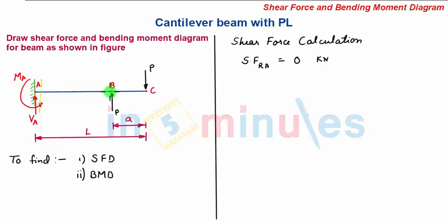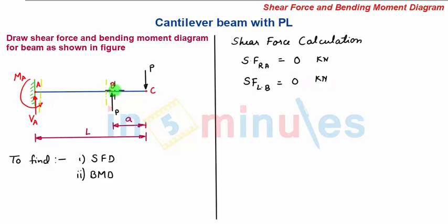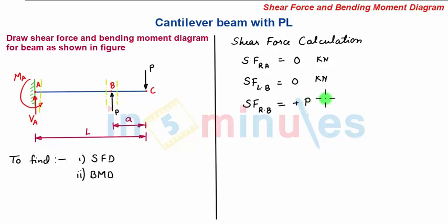Now we move this section towards B, taking a section towards the left of B and very near to it. The shear force towards the left of B is 0 kN, as there is no force acting between the two sections. Moving the section beyond point B to the right of B, the shear force towards the right of B equals the upward force P. Since an upward force on the left hand side is positive, we have plus P kN.